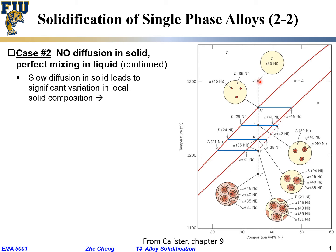Let's say we start from this point — initially it should be all liquid, uniform. Then when I go to this point, I start to form a little bit of alpha solid phase within the liquid — very little alpha within liquid. The alpha solid composition is determined by the intercept with the phase boundary. The first alpha initially would have roughly 46 percent nickel, so the first bit of solid has 46 percent nickel.